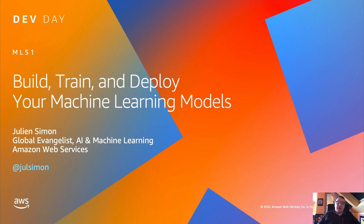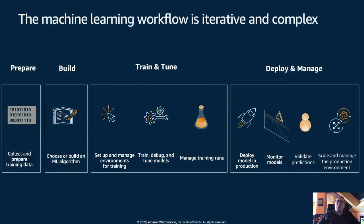This webinar focuses on Amazon SageMaker, a managed service for machine learning. The first thing would be to explain why we built this service. Machine learning workflows are quite complex — they involve many different steps from data preparation to building and experimenting with your first models, to training and tuning models, and deploying and managing models in production, which is probably the hardest part.